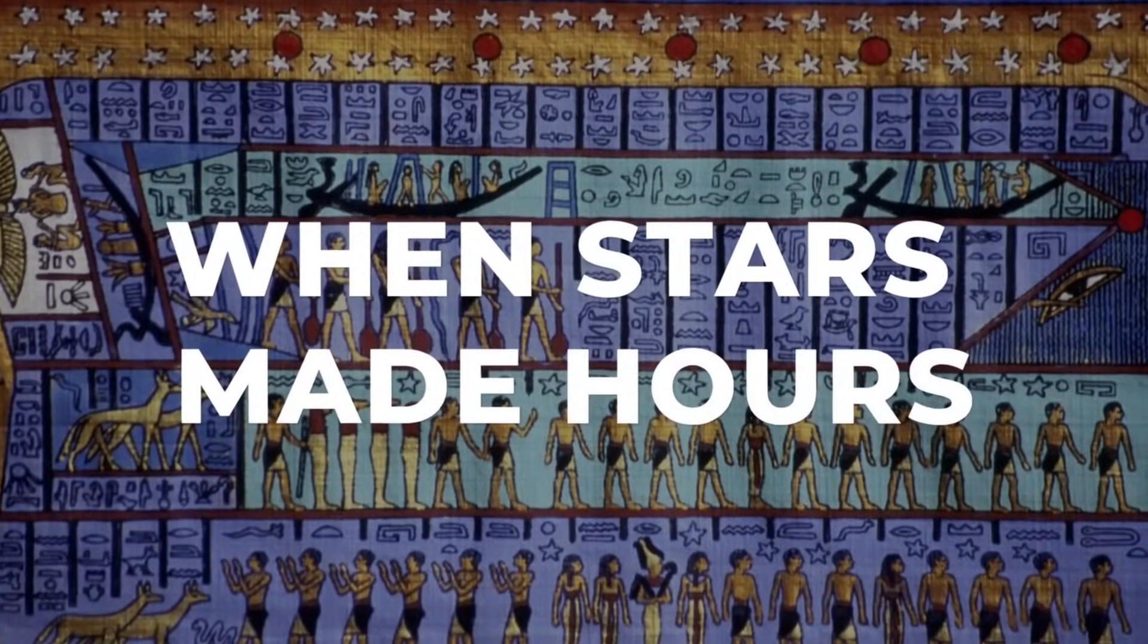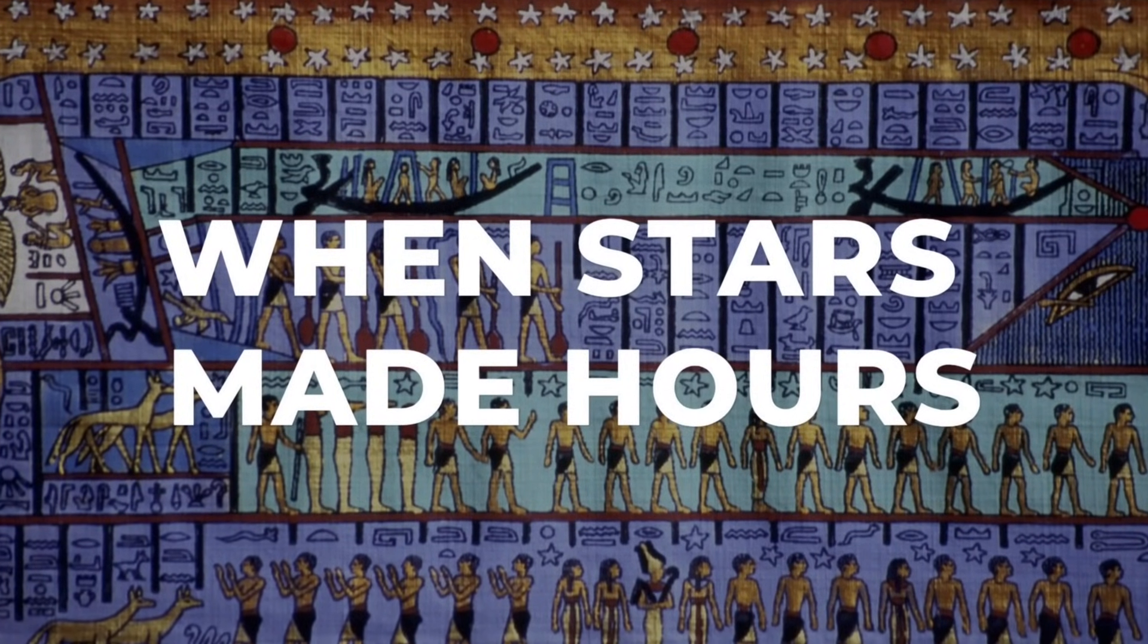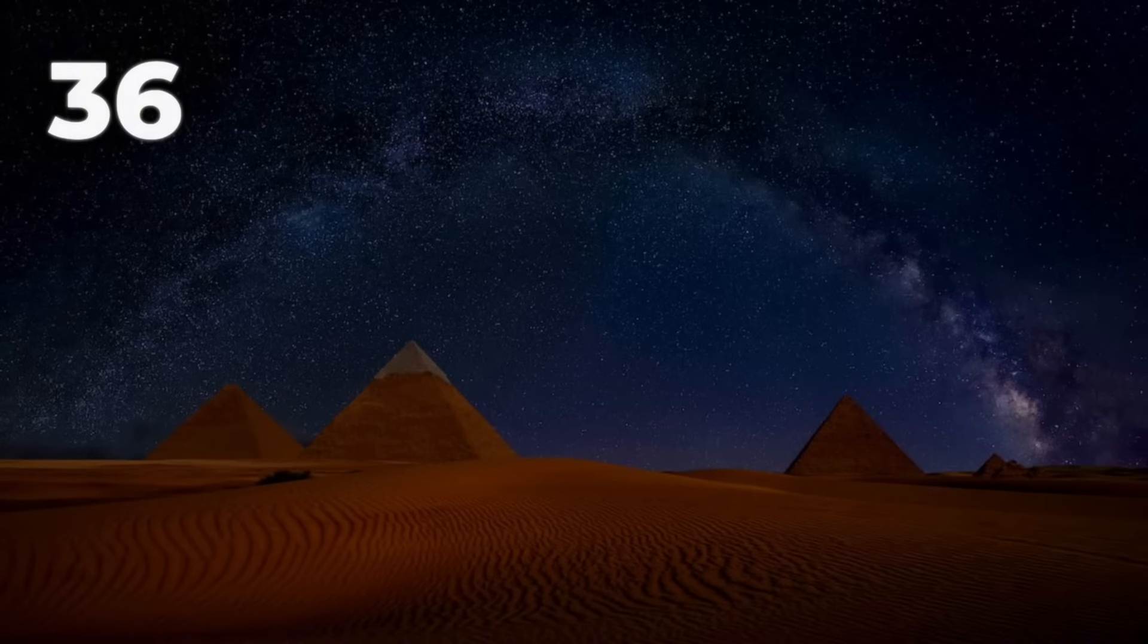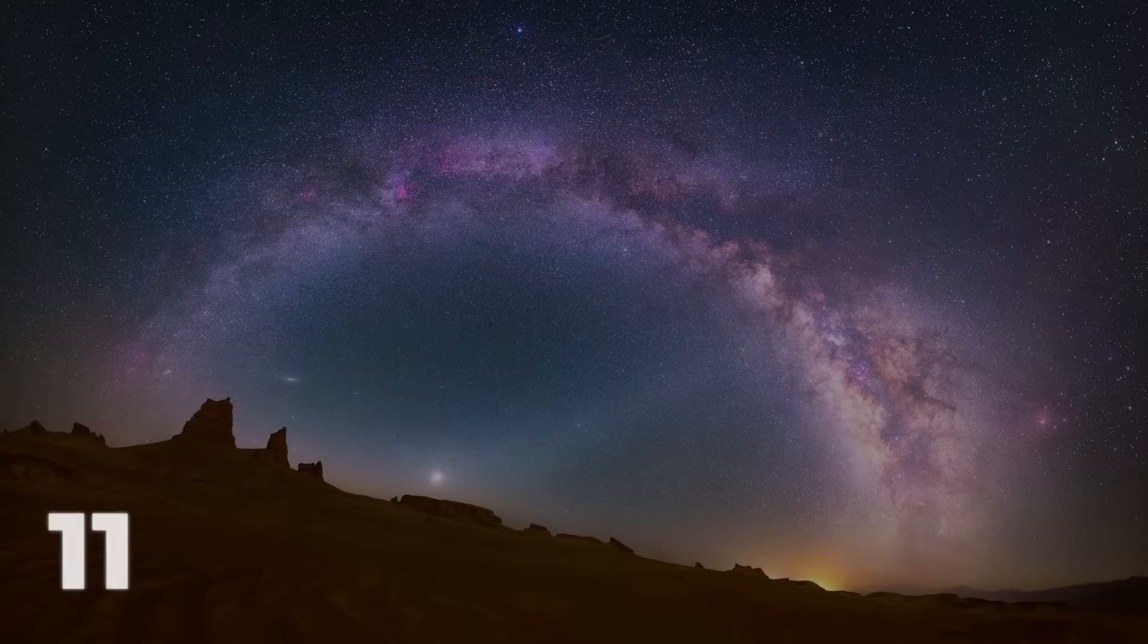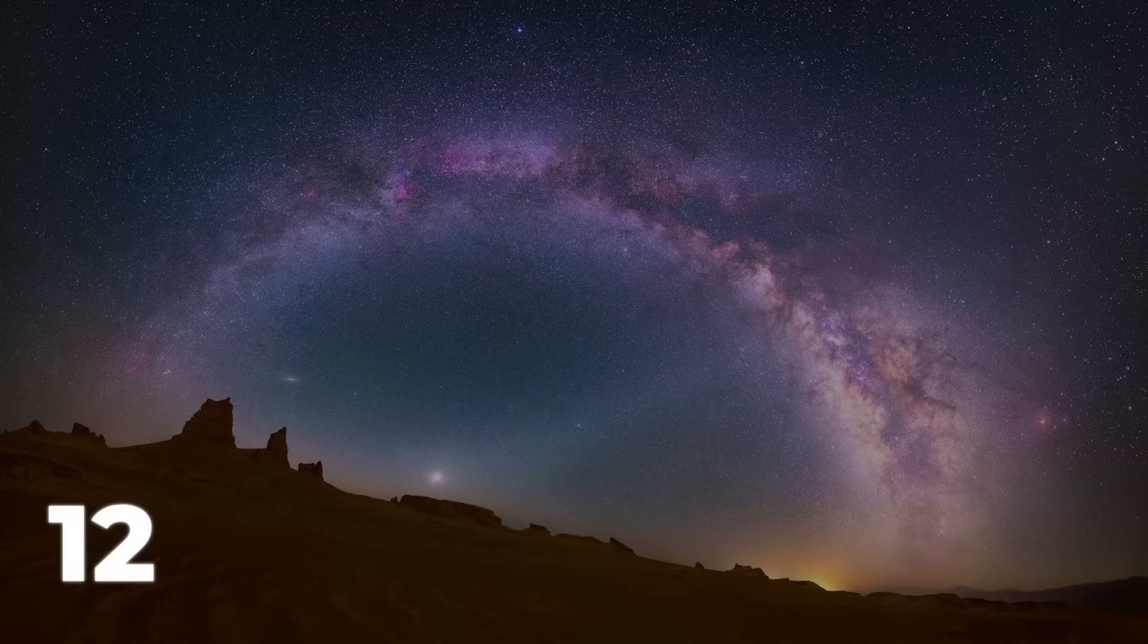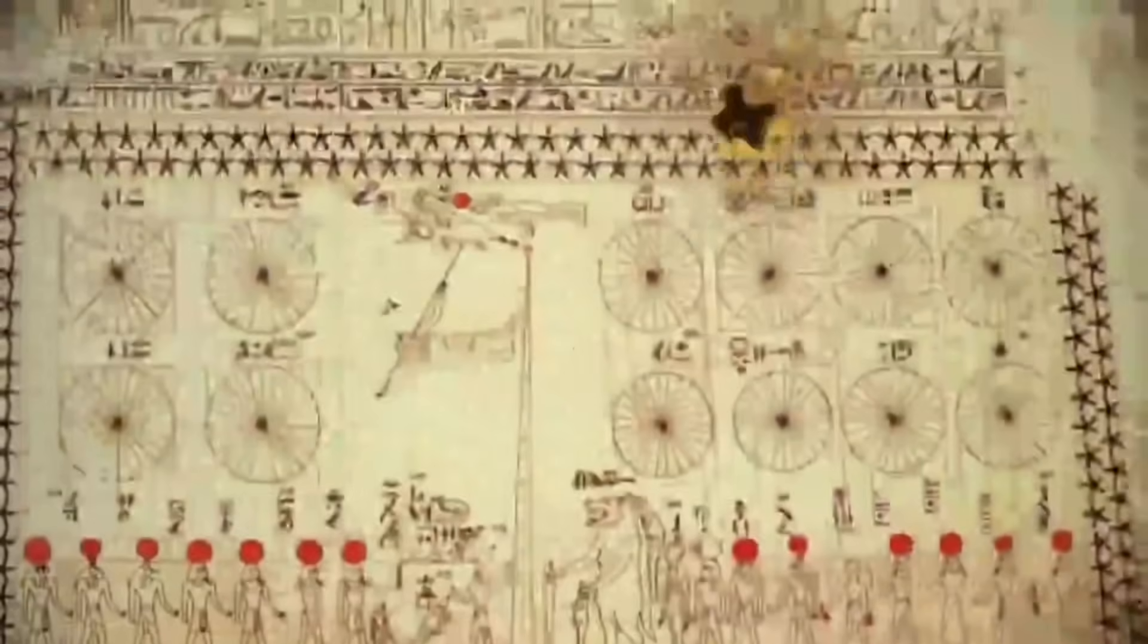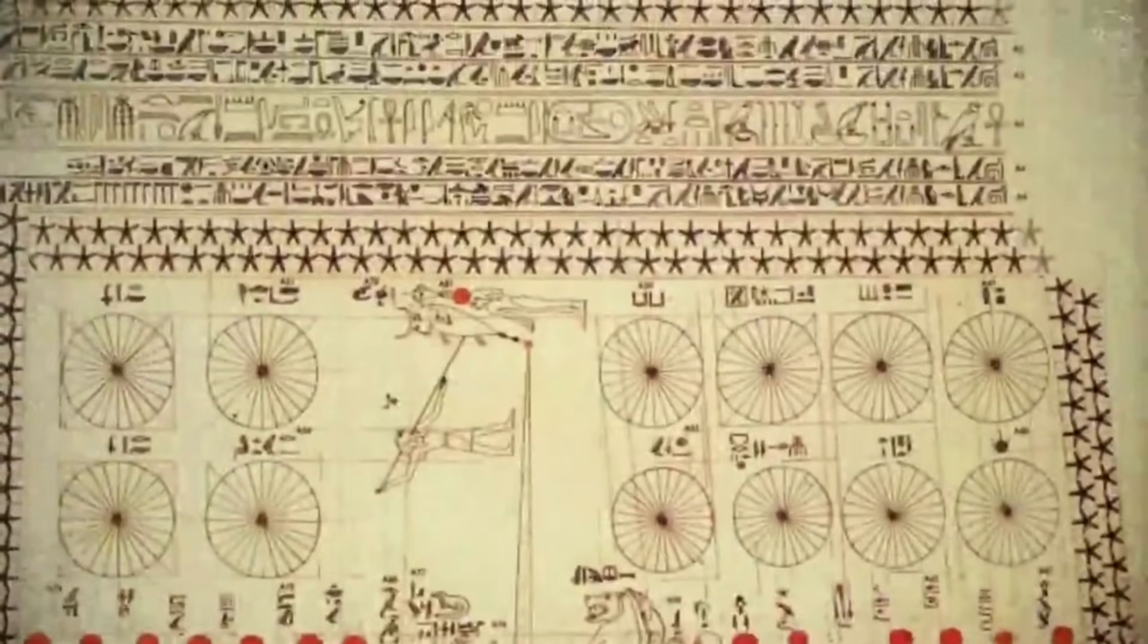Egyptian priests stood beneath a night sky crowded with stars, watching for the slow rise of the next decan. Decans were special star groups, 36 in all, each one climbing above the horizon in turn as the night passed. These rising stars weren't just a curiosity, they acted as markers, carving the darkness into 12 distinct slices. Each decan signaled a new hour of the night.